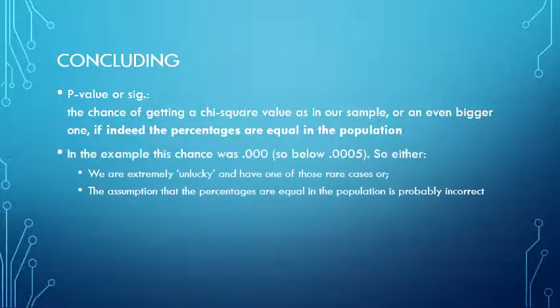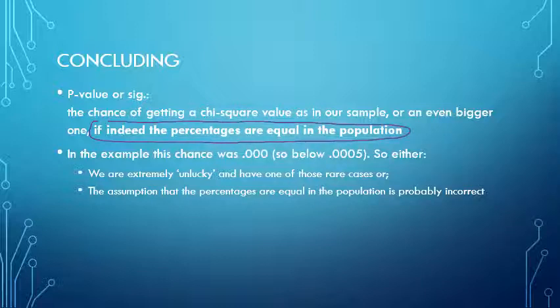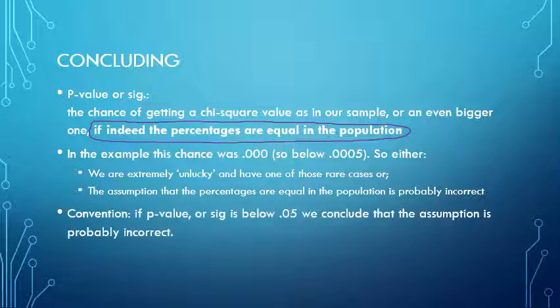In the example, this chance was about zero—actually below 0.0005. It's never actually zero. So either we have a very unlikely scenario and I've picked some very rare cases, or the assumption that the percentages are equal in the population is probably incorrect. This is our assumption about the population at the moment, sometimes also known as the null hypothesis. The convention is that if the p-value is below 0.05, we conclude that the assumption is probably incorrect.